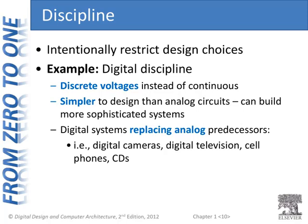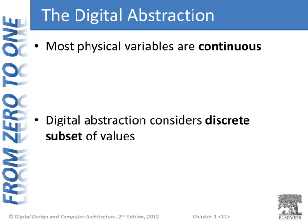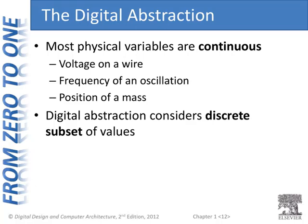Let's dive into this principle a bit more and talk about the digital abstraction. Most physical variables we can think about are continuous — light, temperature, really any physical variable, like voltage on a wire or position of a mass. But in digital abstraction, we don't consider all those possibilities. We consider a discrete subset of values, and we call those discrete subsets either on, one, or off, zero. We use this binary classification: is it a one or a zero? I don't want to know one-half or 0.726 — just is it one or is it zero?